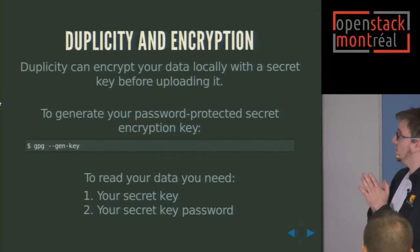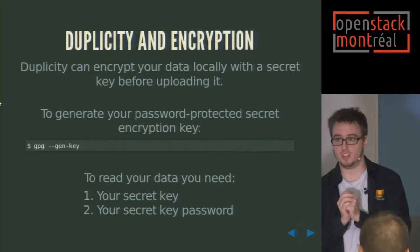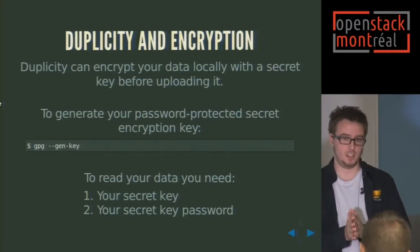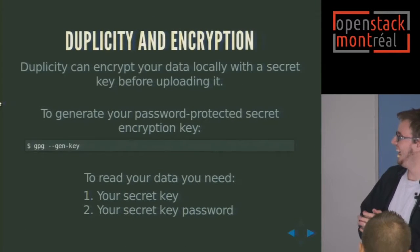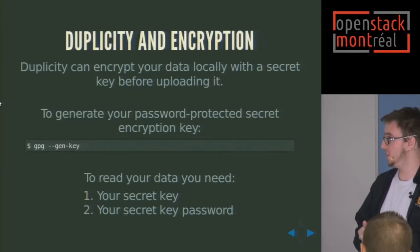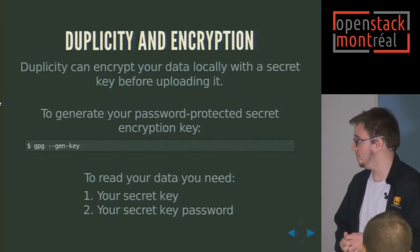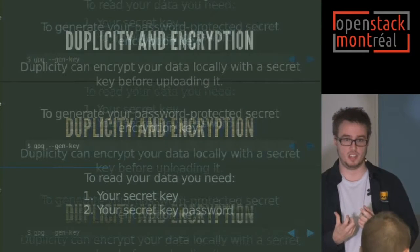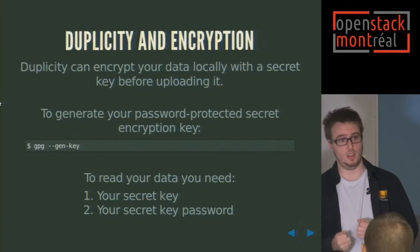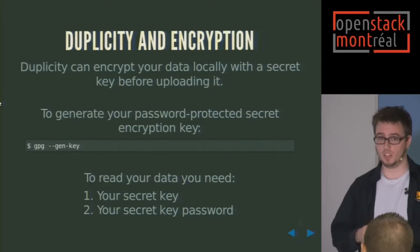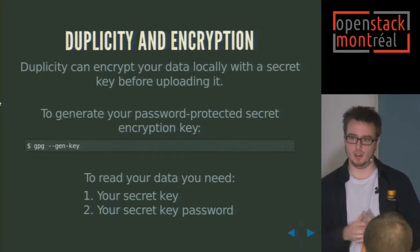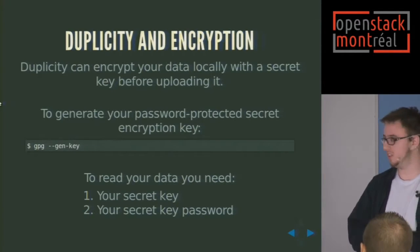Duplicity and encryption: Duplicity is able to encrypt your files before uploading them to the cloud — please do, because you don't want the NSA looking at your cat pictures. You can generate a password-protected secret encryption key with GPG. This private key is password protected, so Duplicity will encrypt your files with it. Even if someone gets hold of your key, if they don't have your password, the key is useless — it's a kind of two-factor authentication, so only you can hopefully read your files.